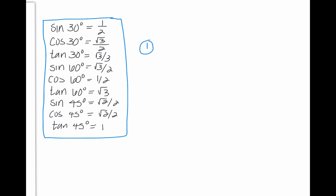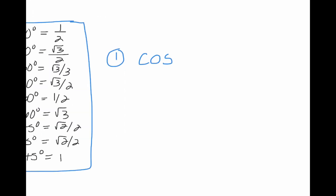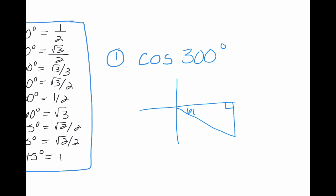So let's say I have a problem like cosine of 300 degrees. I'm going to show two different ways we could do this. The first method would be using the triangles like we just learned. I know that 300 degrees is in quadrant 4, and this is 60 degrees away from the x-axis. So that means this angle has to be 30 degrees. I know opposite from 60 degrees is radical 3 — it has to be negative because it's going down. Opposite from 30 degrees is 1, and my hypotenuse is 2. So if I'm doing cosine, adjacent over hypotenuse, I get 1 over 2.